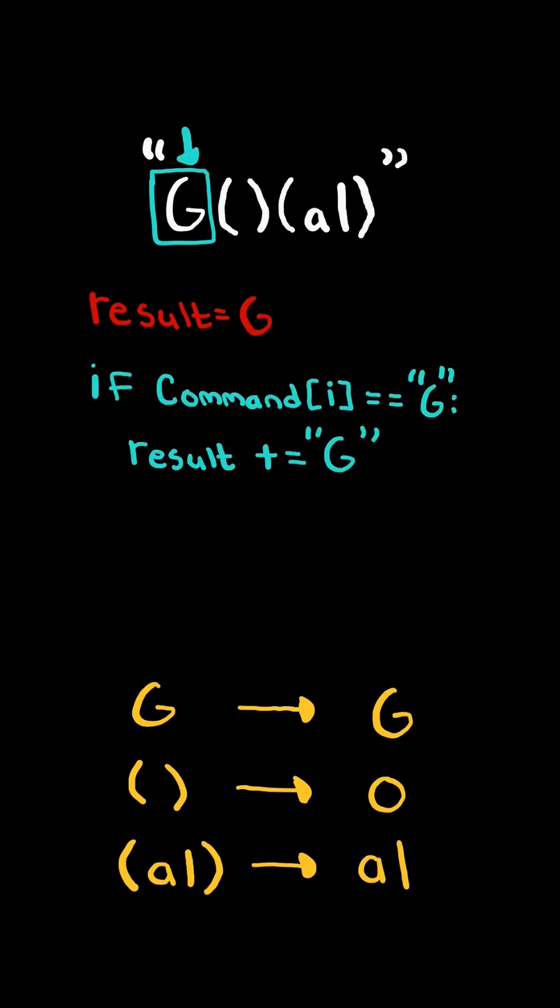If the character is a G, then we add G to the result, and we increment the index by one.